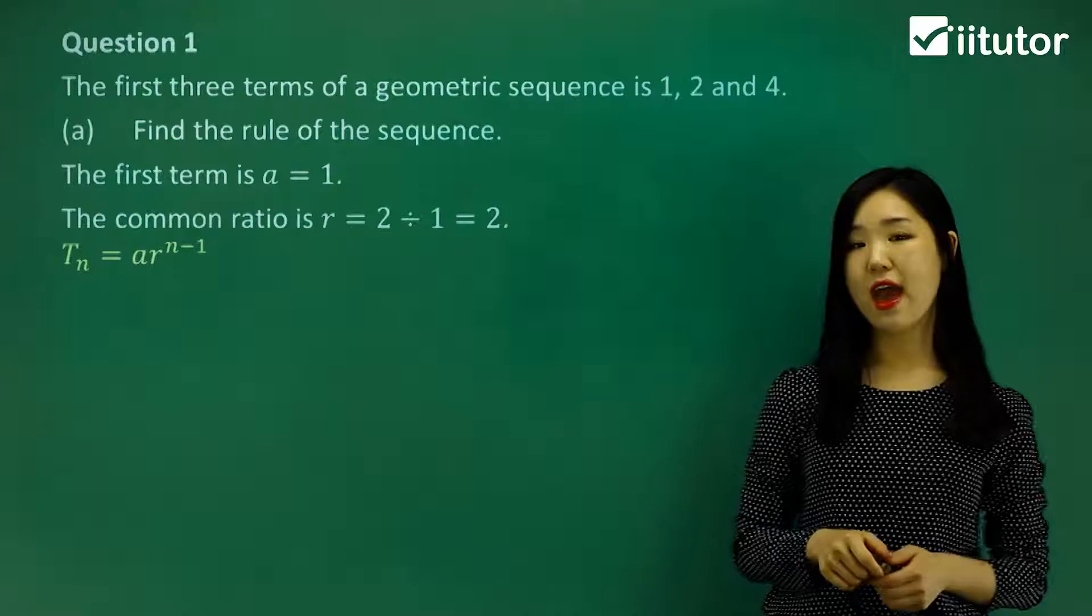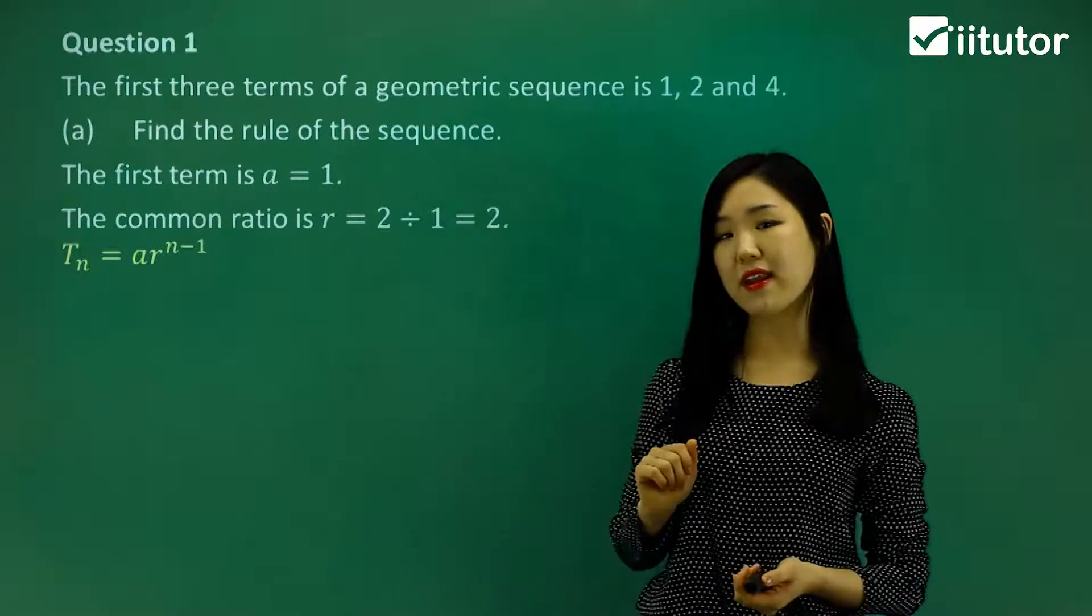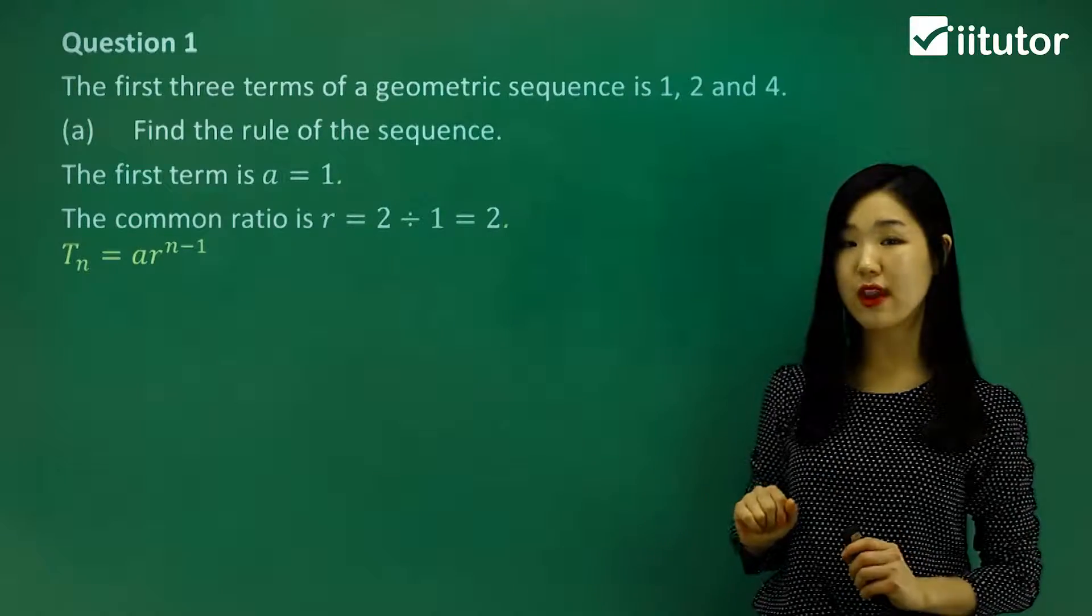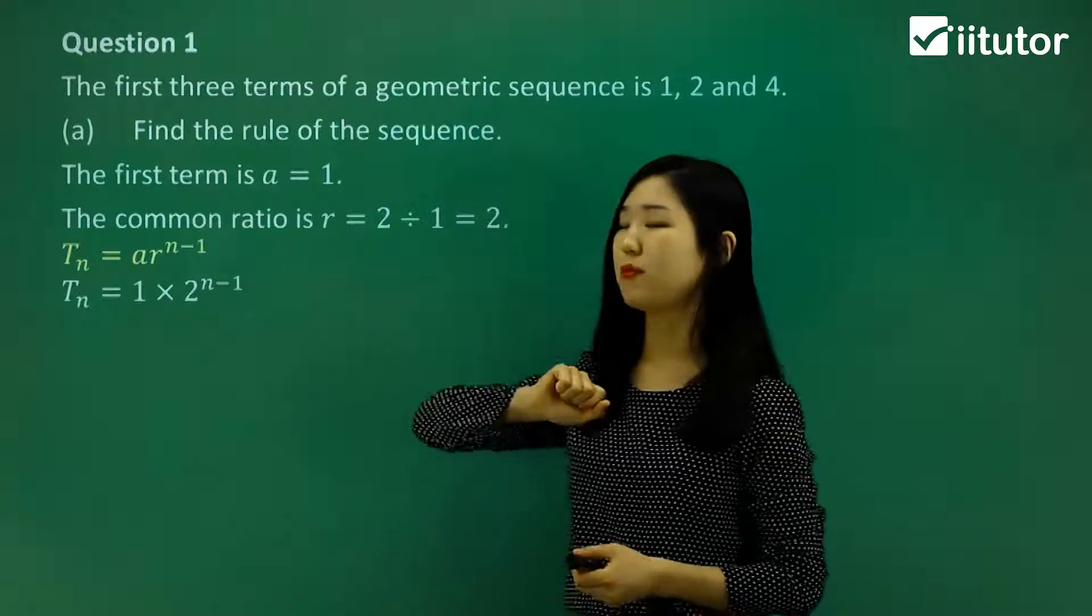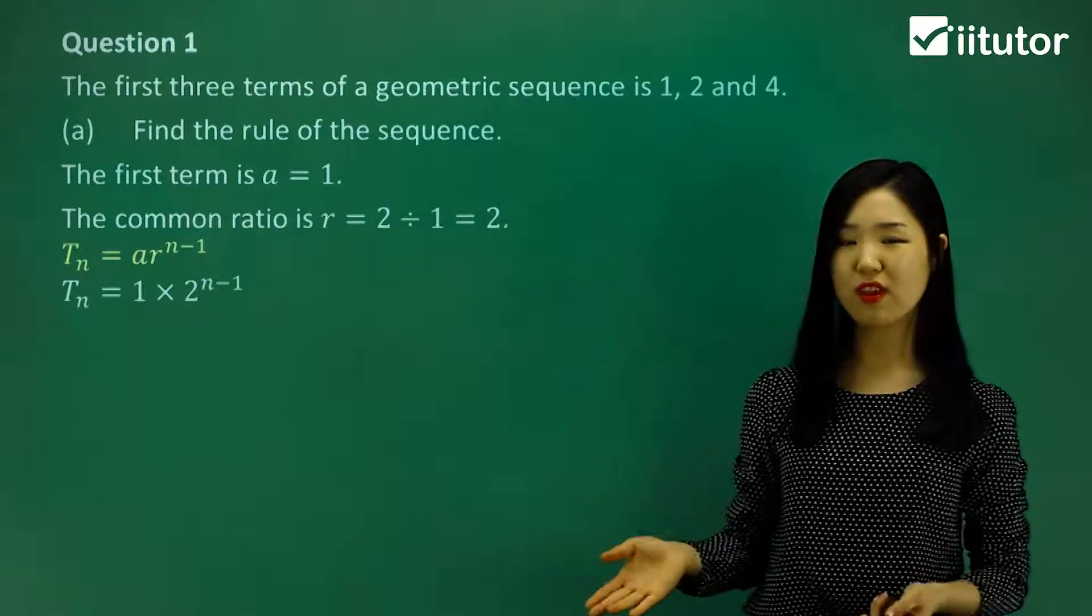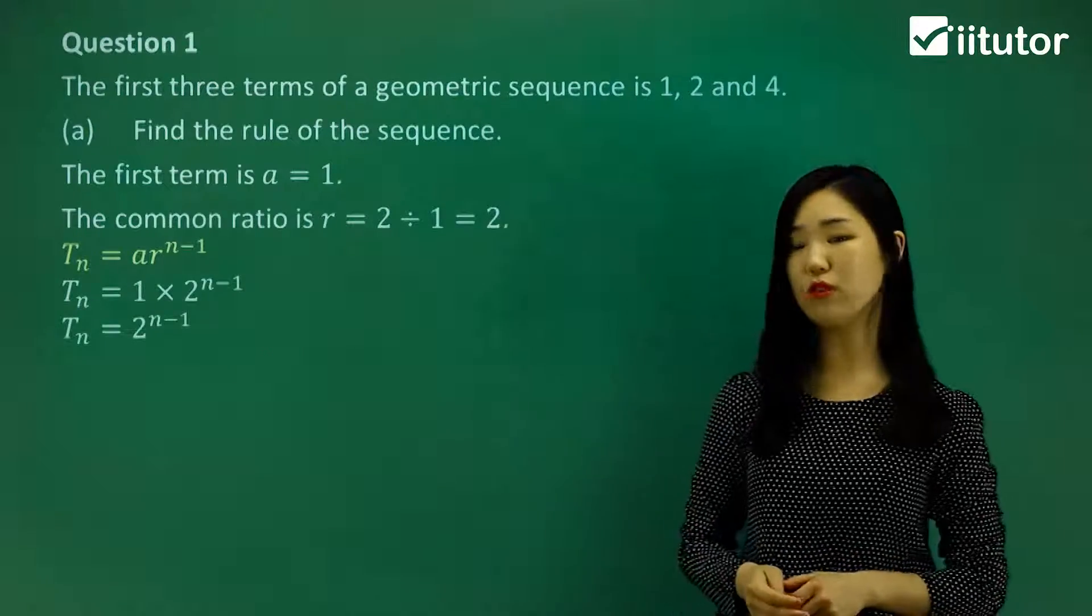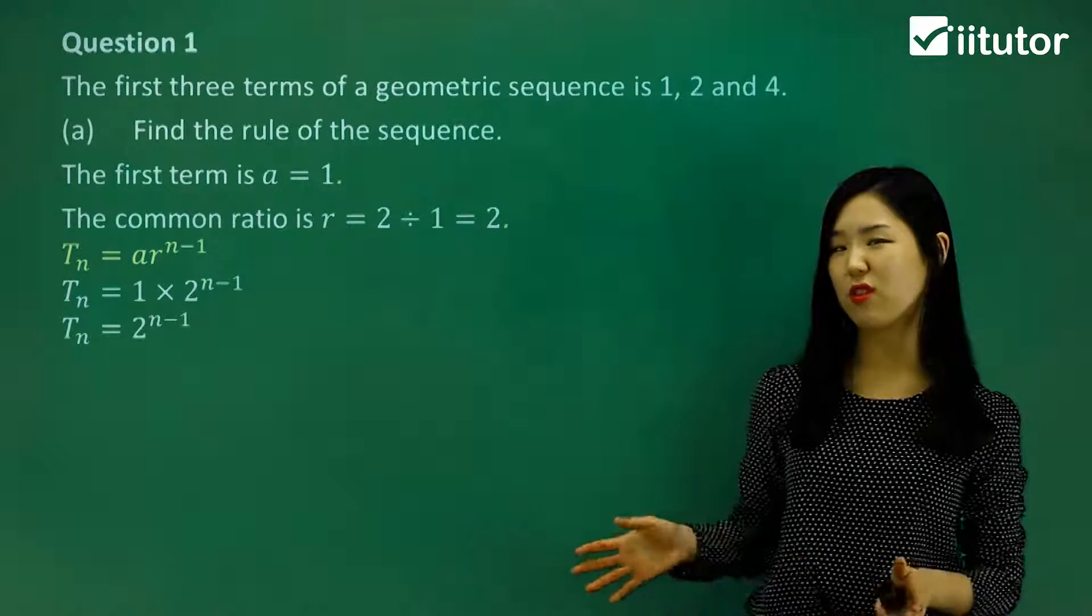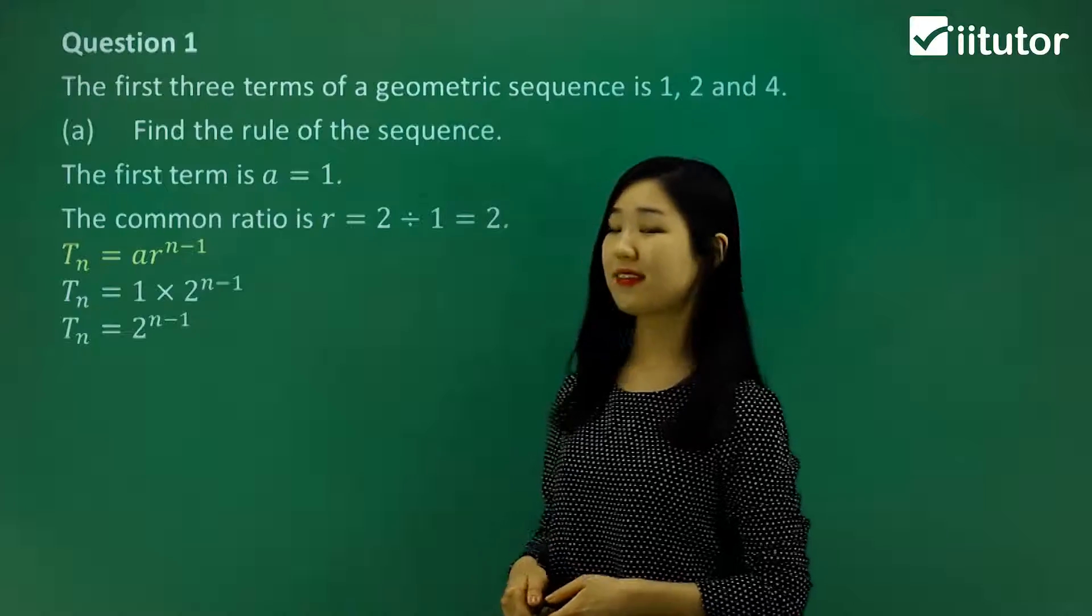So we've got that, and we've got our formula ready for us. Tn is ar^(n-1). So let's put our values in. n is just n, we don't know what n is, so leave n as n. a is going to be 1, R I've replaced it with a 2. Now, 1 times anything is just itself, so I'm not going to write the 1. So it just looks a bit more simple. 2 to the power of n minus 1, and that's pretty much it. That's the rule. We call this general term or the rule of the geometric sequence.